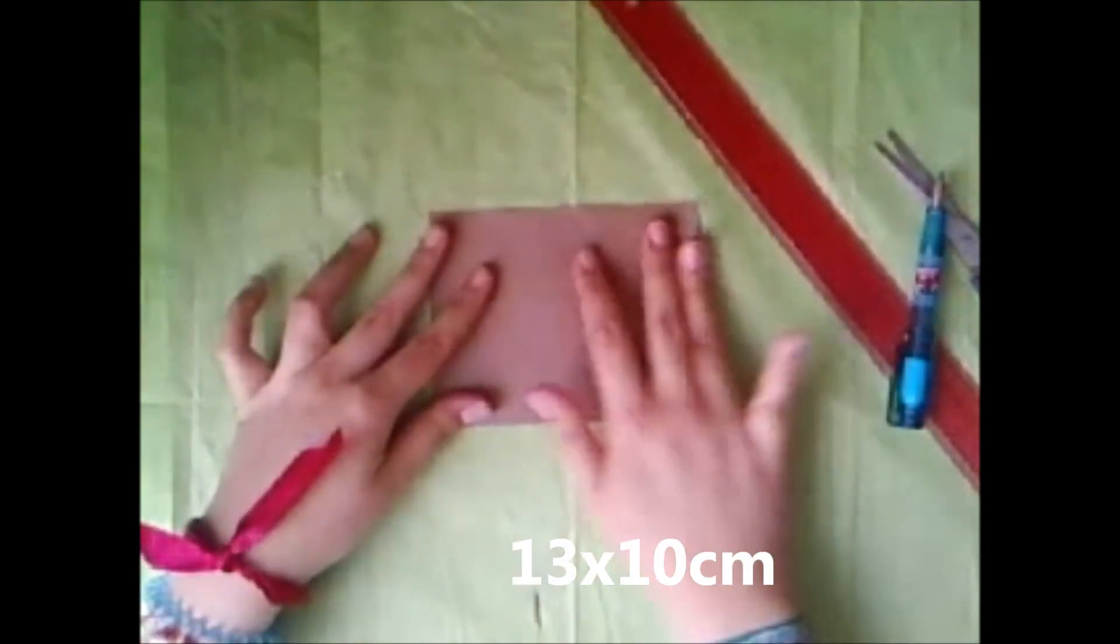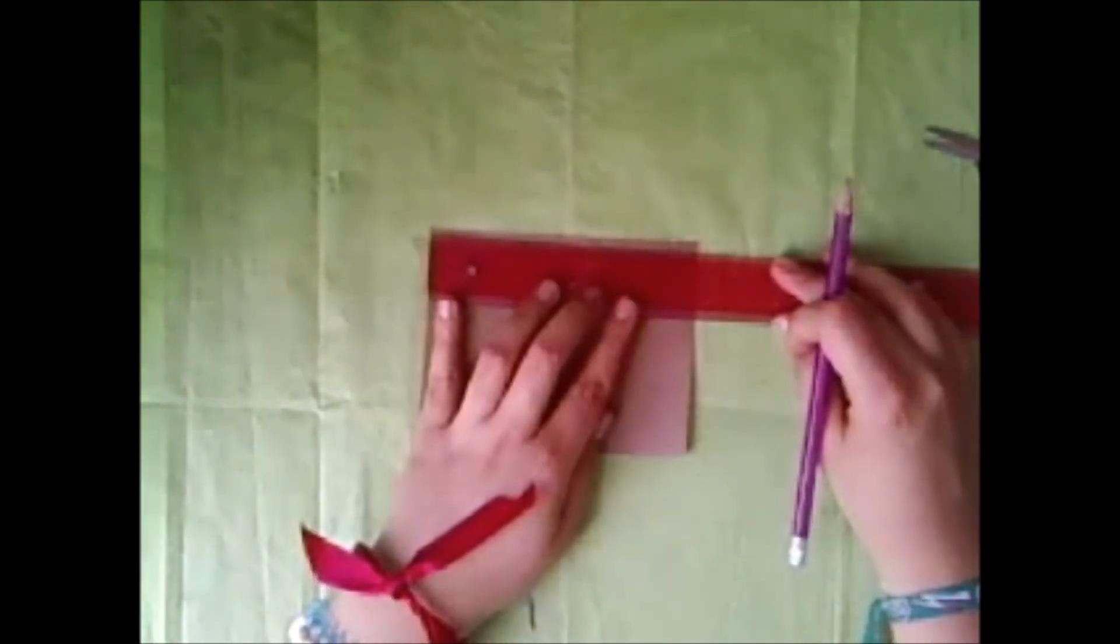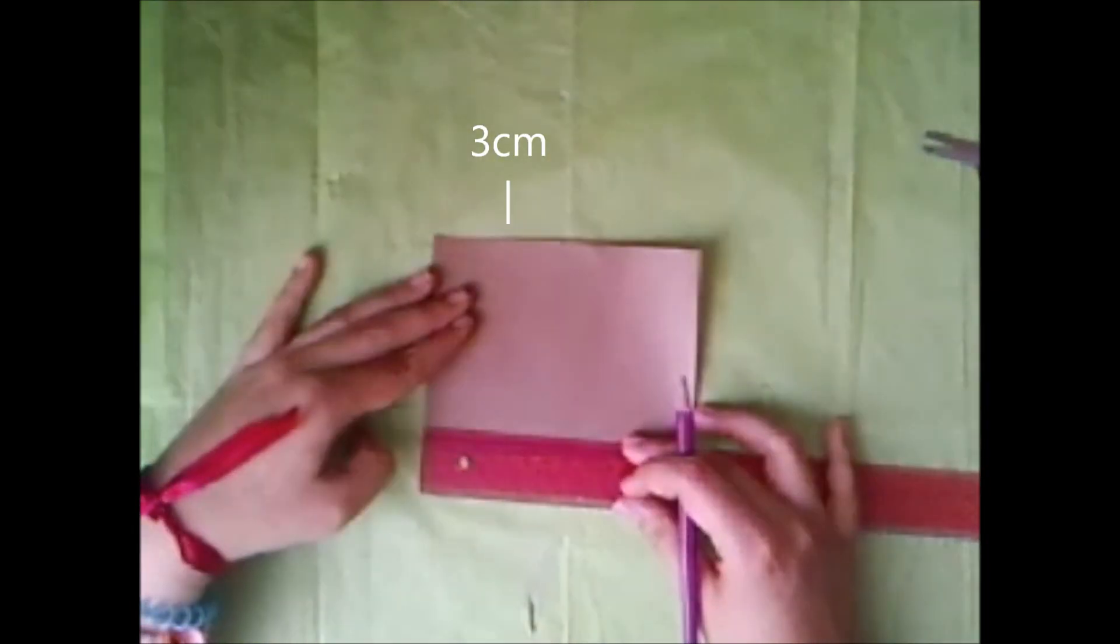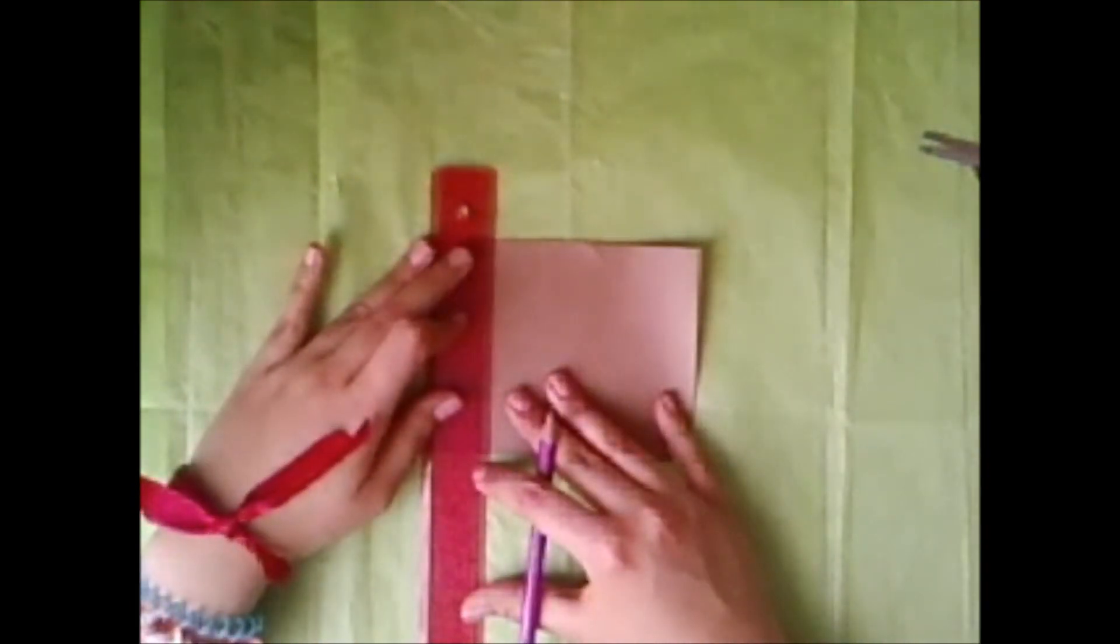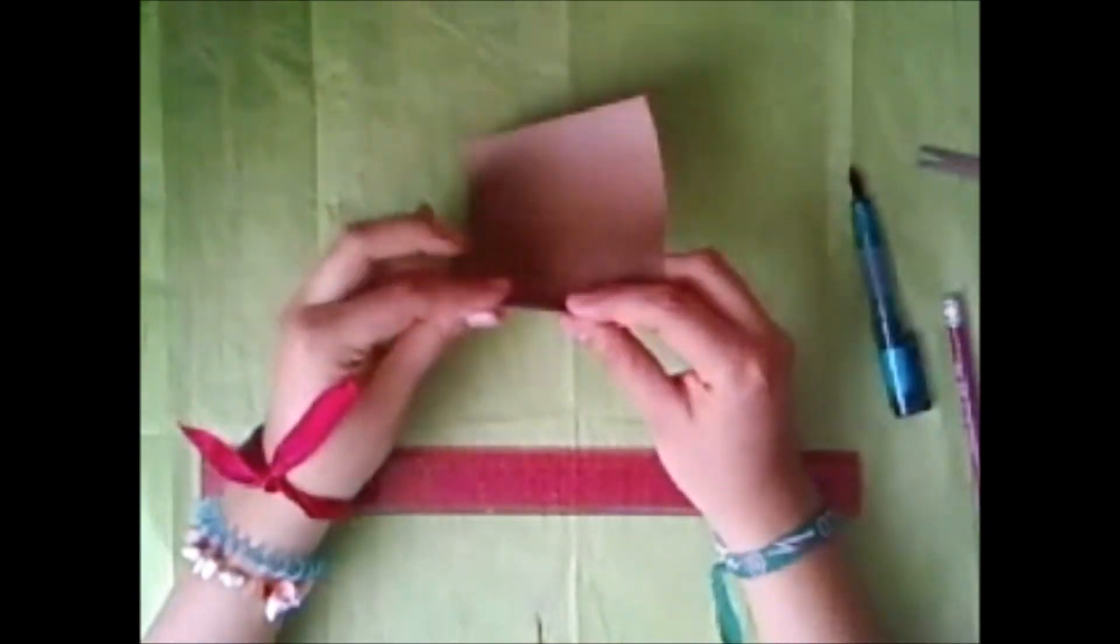Y ahora en otro pedazo de cartulina haremos una pieza de 13 x 10 cm. Luego que la tengamos, haremos marcas a los 3 cm, tanto arriba y abajo, y marcaremos con una línea. La doblaremos ayudándonos con un punzón, y doblaremos.